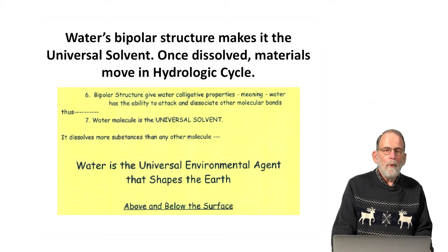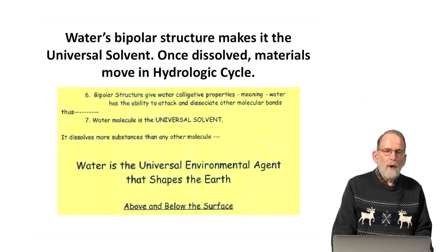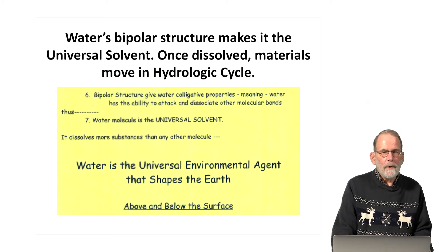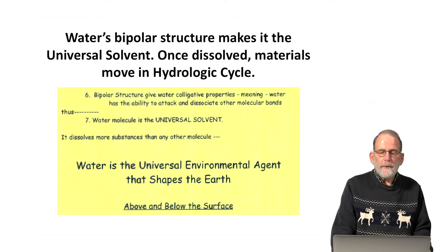Water, more than any other substance on Earth, is the universal solvent. It will dissolve just about anything. Once whatever it is gets dissolved, it's free to move with wherever that water goes, including from upland source areas into bottomland sinks. So water is the universal environmental agent that shapes the Earth, both above and below the surface.